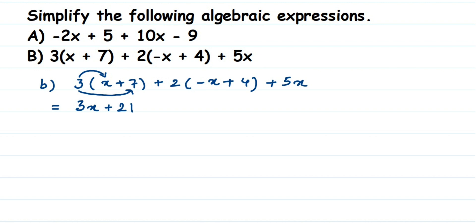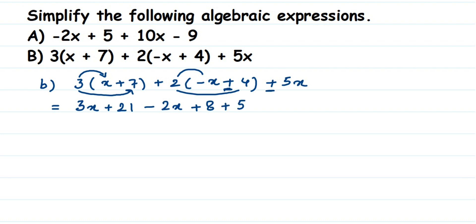Then we have a plus sign, and for the second bracket we have 2 outside. So 2 times minus x gives minus 2x, and 2 times 4 gives 8, so plus 8. Then we also have plus 5x. So after opening all brackets, we have: 3x plus 21, minus 2x plus 8, plus 5x.